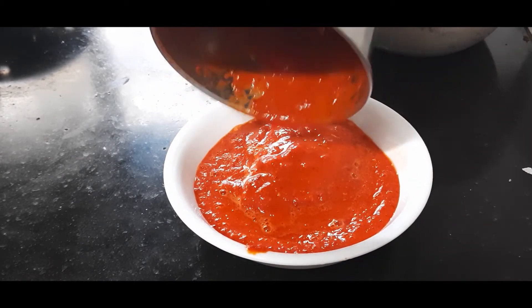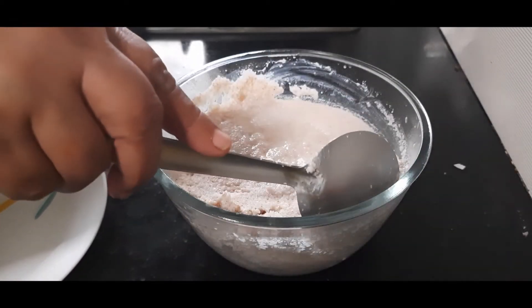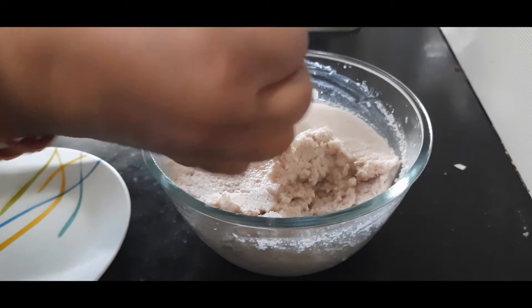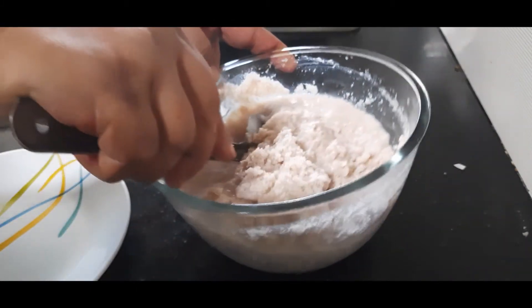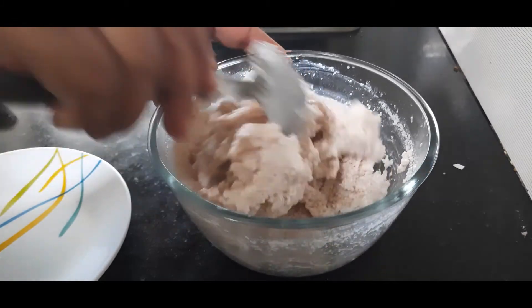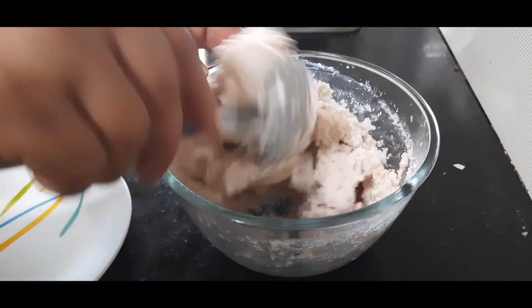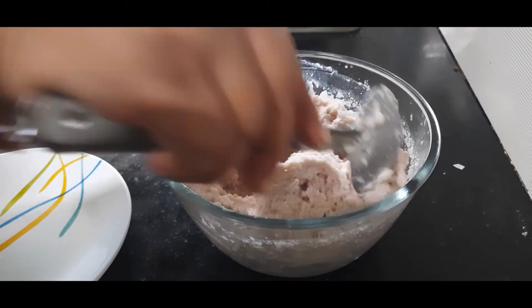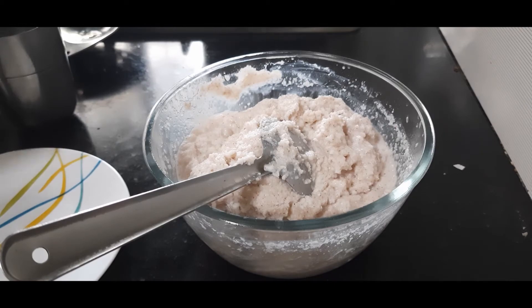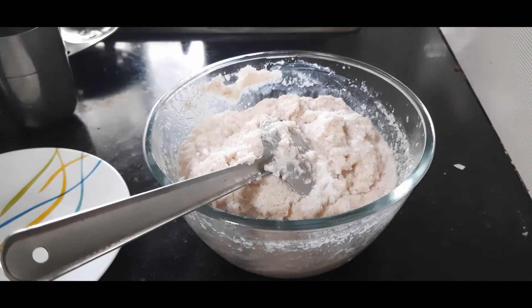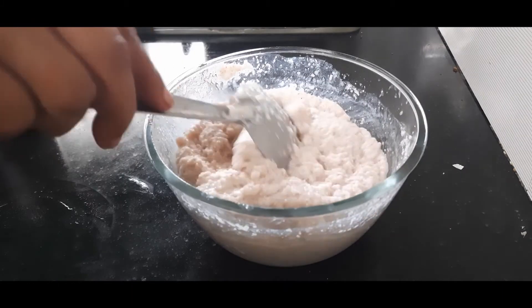Let's check on the batter now. The batter is well soaked. We can feel it, and you can adjust the consistency by adding more water if required. I am adding about half a cup of water more so that we get an idli consistency batter. Also, let's add salt to taste. I am adding one teaspoon of salt. Mix this well. This seems perfect now.